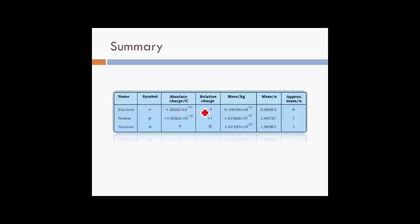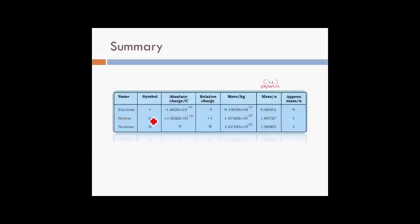Every charge in the world is some integral multiple of this relative charge — always −2, −3, −4, and so on. The mass of an electron is 9.11 × 10⁻³¹ kilograms. In terms of atomic mass units — now known as unified mass (u) — the electron's mass is 0.00054 u.